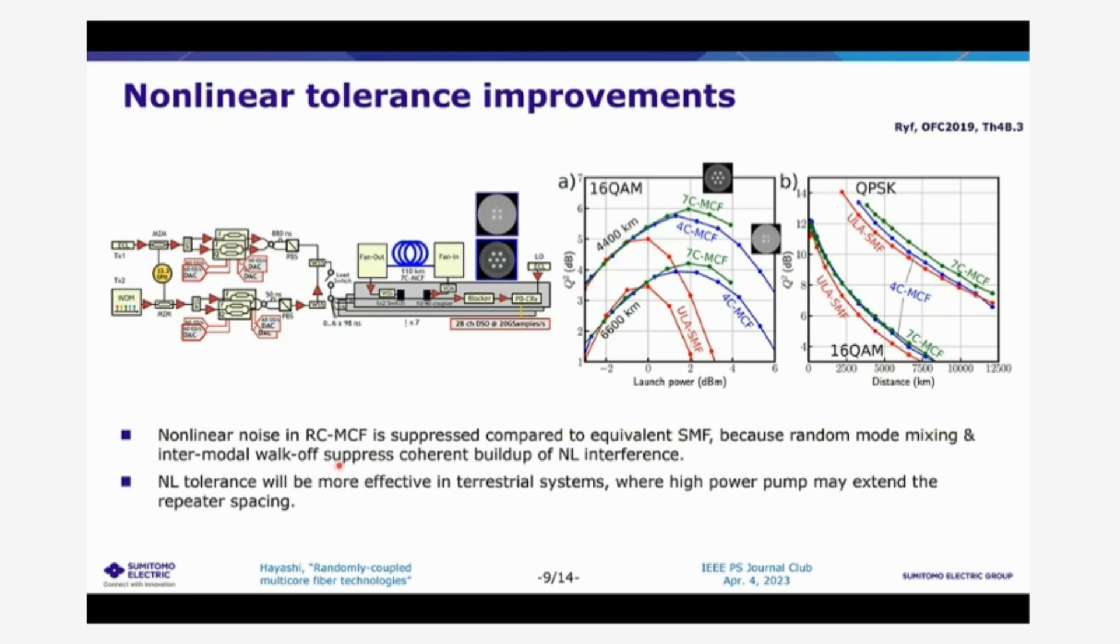So using such a randomly coupled four core fiber and seven core fiber, Rowland Ryf at Bell Labs conducted a transmission experiment. And in this experiment, we compared four core fiber and seven core fiber and also compared with a single core fiber. All the fibers have similar effective area. And as you can see, the randomly coupled core fiber has a higher optimum launching power and a higher Q factor after the transmission. So we can see that this randomly coupled multi-core fiber has better non-linear tolerance and such non-linear interference can be suppressed thanks to the random coupling characteristics.